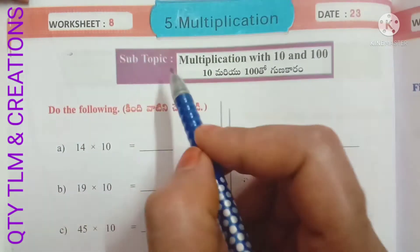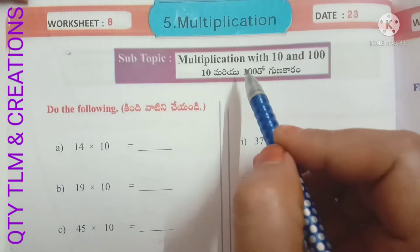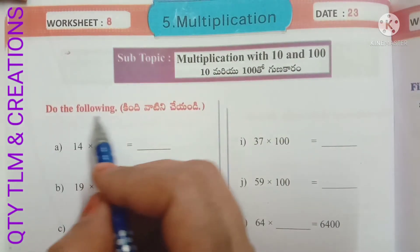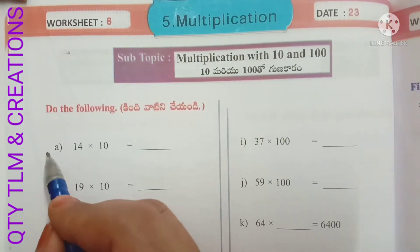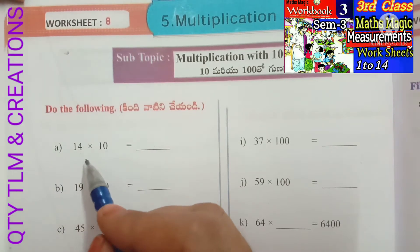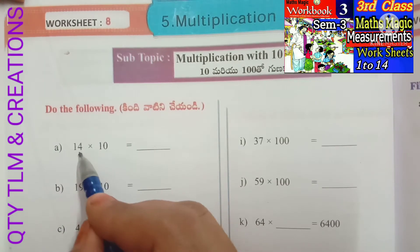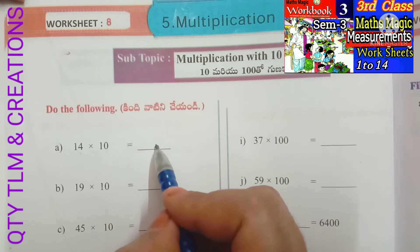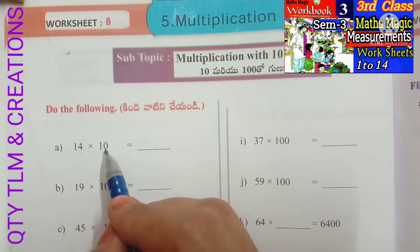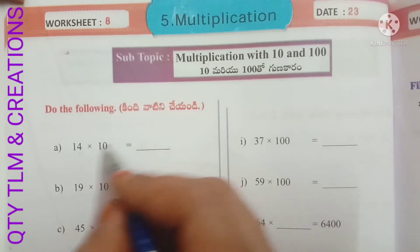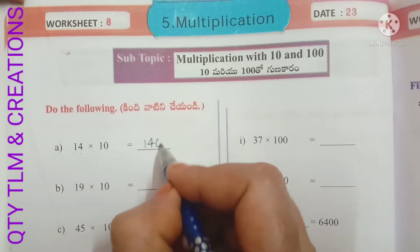Next, worksheet number 8, subtopic: multiplication with 10 and 100. Do the following. A: 14 into 10. When we multiply a number by 10, the product comes out to be the multiplicand followed by one zero. So here we will get 140.